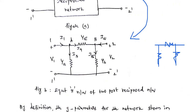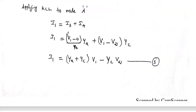The Y-parameters of the equivalent pi network may be obtained using Kirchhoff's current law. Note down the currents in all branches: I1 is the input current, I2 is the second port current, I3 flows through the branch with Y-A, I4 flows through the middle branch with Y-C, and I5 flows through the branch with Y-B. There are two nodes: node A and node B. Applying KCL at node A: I1 = I3 + I4.